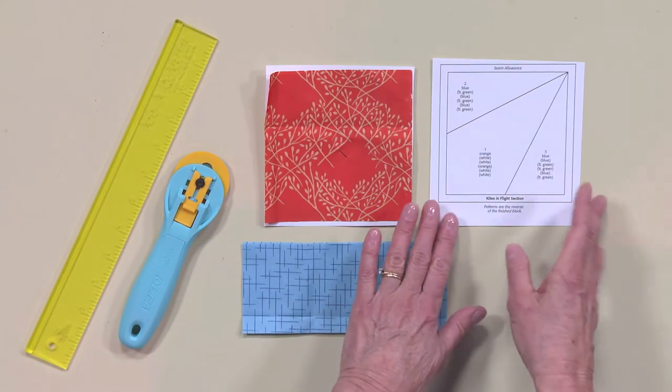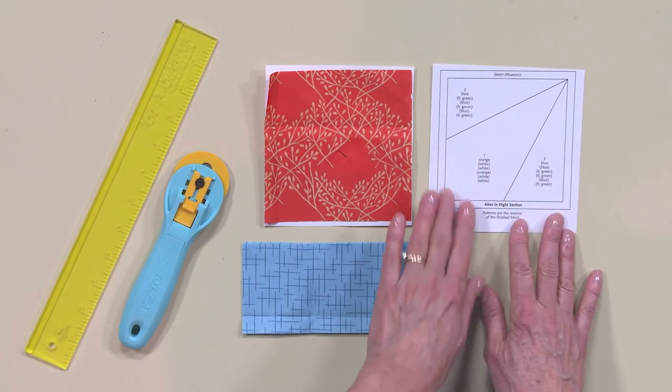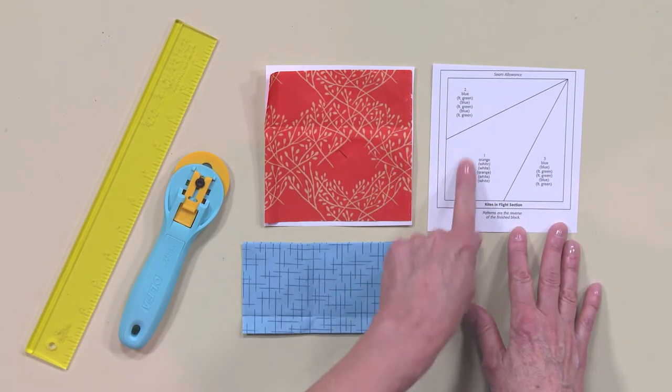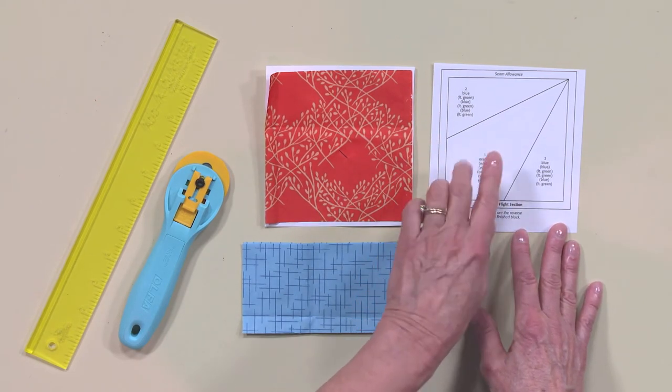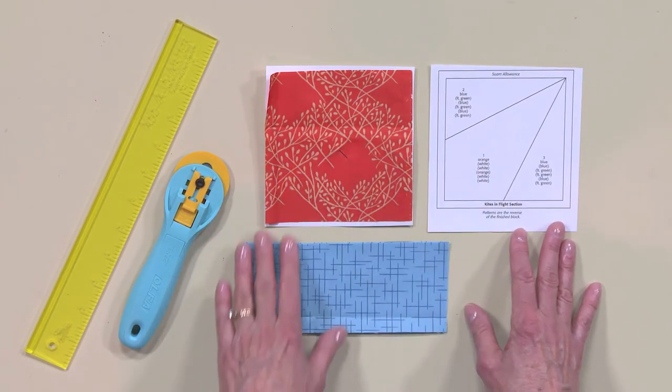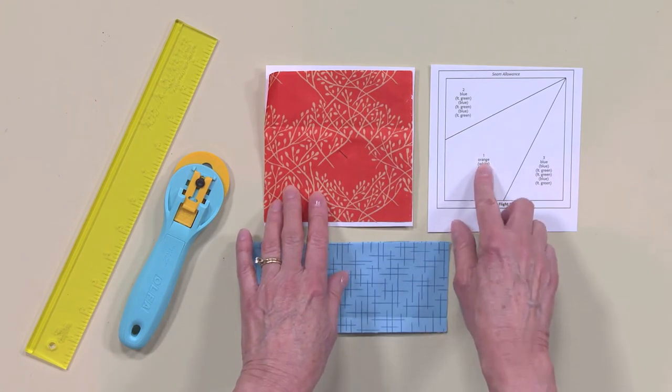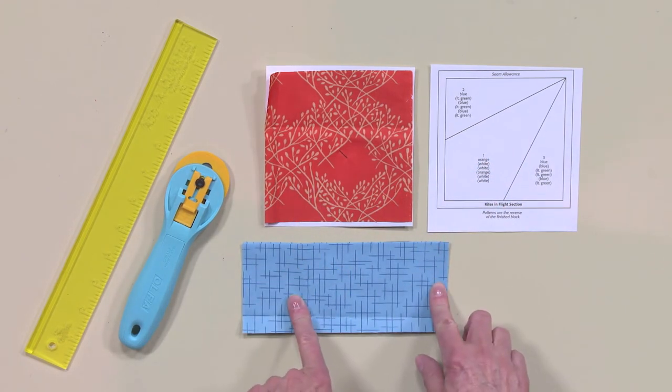This quilt is foundation pieced with one main section. The colors for the different sections are shown in parentheses on the back. So the first thing you'll do is figure out where each of the colors is going, and I'm going to work on section one where there's orange in the middle and blue on the outside.